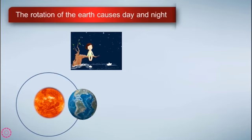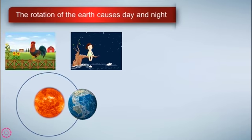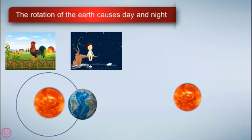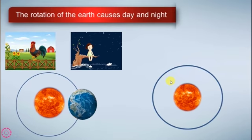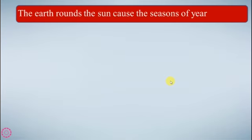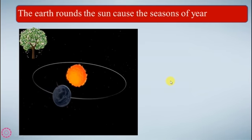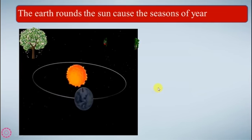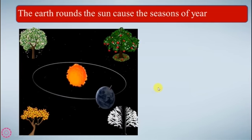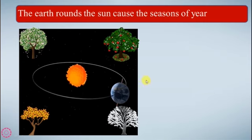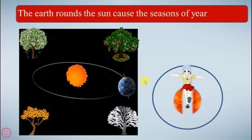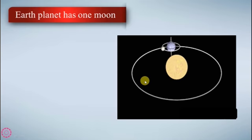This is the day, this is the night. The Earth rounds the Sun, causing the seasons of the year. The Earth rounds the Sun, causing the four seasons of the year.